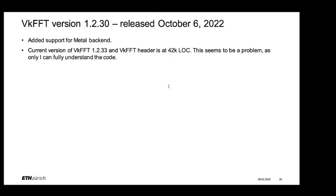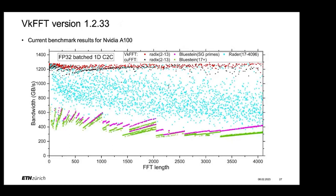I also added a Metal backend, which took about seven days and the purchase of a MacBook. This brought VKFFT to 42,000 lines of code, the latest version, and now probably only I can fully understand it — which is a big problem, and there is also serious code duplication. The final benchmark on NVIDIA A100 in single precision batch computations shows all the different algorithms and where they work. Basically for these particular use cases VKFFT matches, and for the Rader algorithm it outperforms greatly NVIDIA's library.